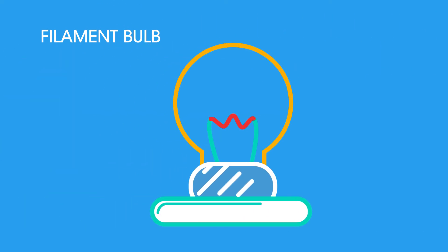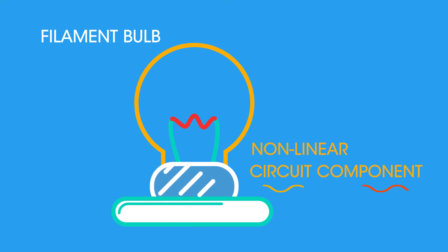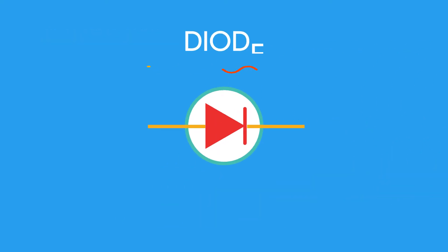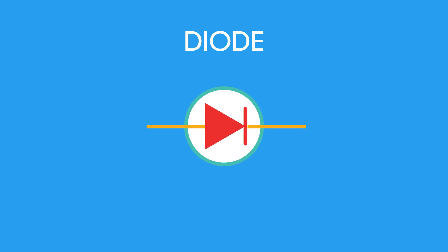The filament bulb is therefore not an ohmic conductor, so it's a non-linear circuit component. Here is the symbol for a diode. A diode is a component that allows current to go in only one direction and is called a semiconductor.